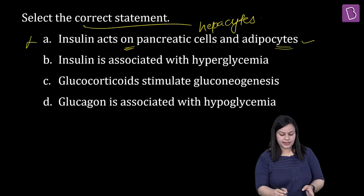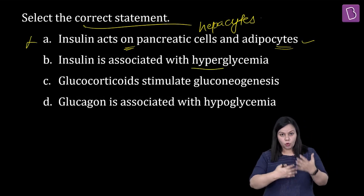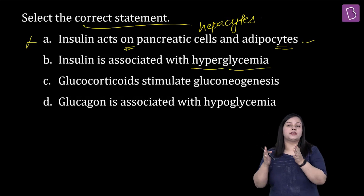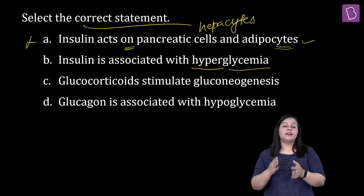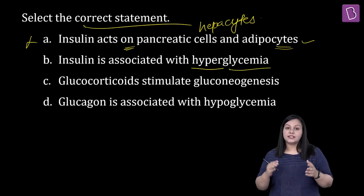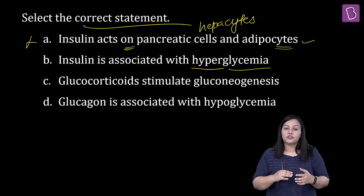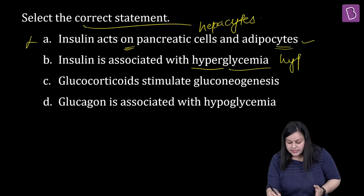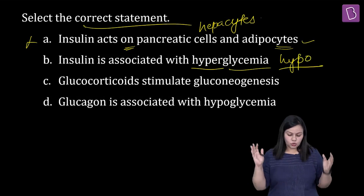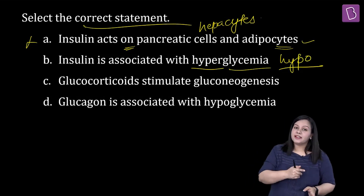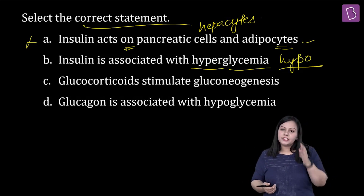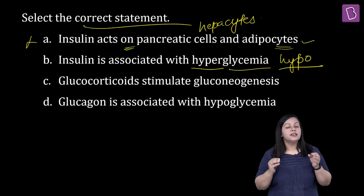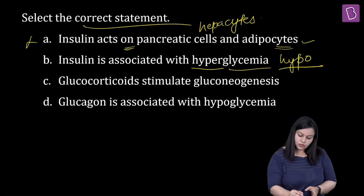Next — insulin is associated with hyperglycemia. Hyper means more, glycemia refers to amount of sugar in blood. Insulin ki wajah se blood mein sugar ka level basically leads to lesser amount of sugar when insulin is working well — so this condition is called hypoglycemia, not hyperglycemia. So insulin is associated with hypoglycemia. In fact hyperglycemia se toh glucagon associated hota hai, jo insulin ka antagonistic hormone hai — aur insulin aur glucagon ke balance se hi humari body mein sahih tariqe se sugar metabolism ho sakta hai. Yeh statement bhi ho gaya incorrect.